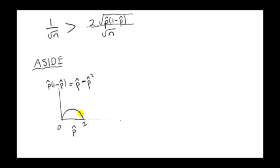Since the square term is negative, we have an inverted parabola. It has to pass through 0 and 1. When P hat is 0, this is 0. When P hat is 1, this quantity is 0.